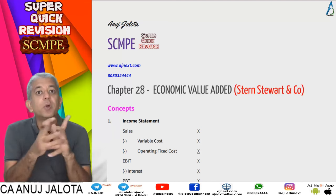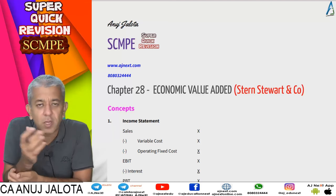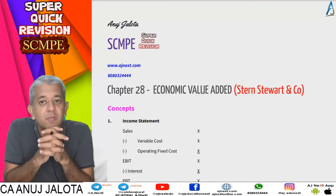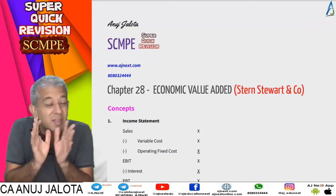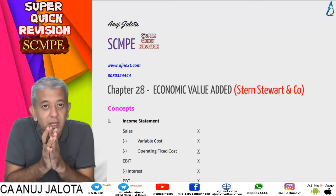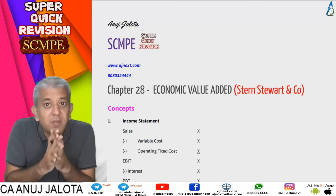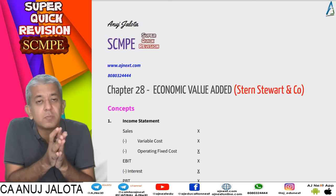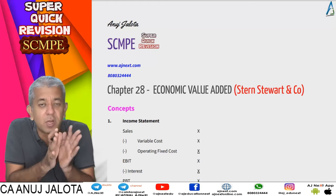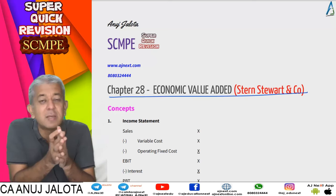Hi students, welcome back to our super quick revision series. These series are designed to make you all do a recap of whatever we have done in class. Let's start with Economic Value Added — EVA — made by Stern Stewart and Company. It's a trademark thing; it was patented by them, so wherever EVA is mentioned, a registered sign is also there.